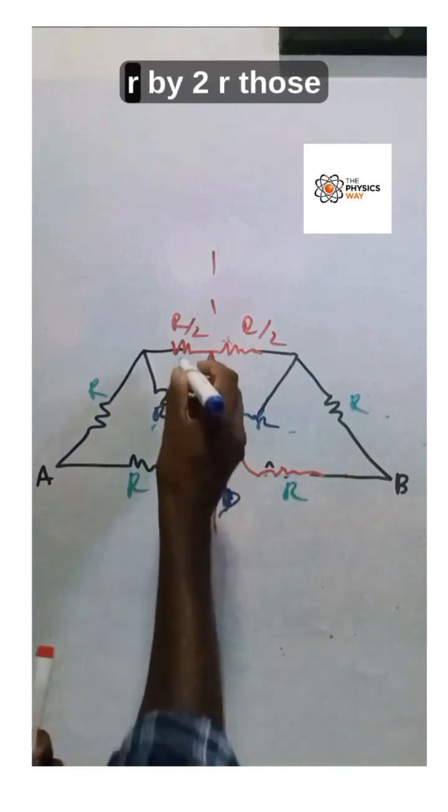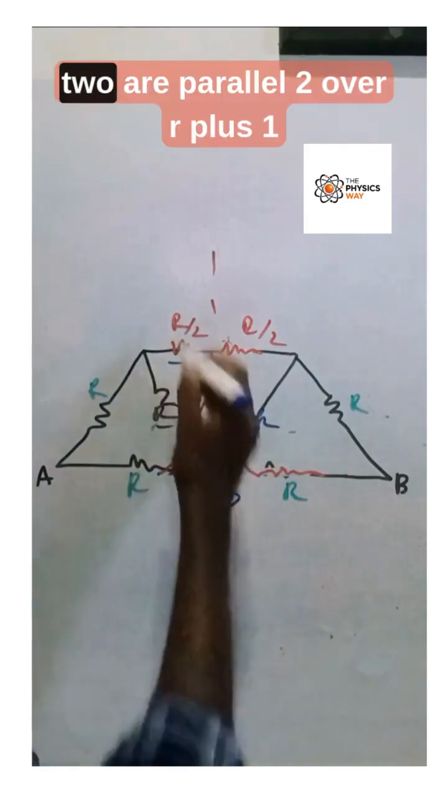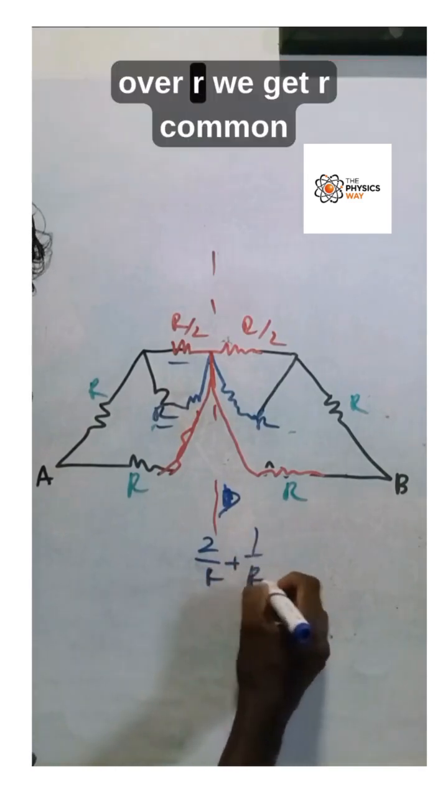Those two are in parallel: 2 over R plus 1 over R. With R as common denominator, 2 plus 1 equals 3, so that's R over 3. R over 3 and R are in series.